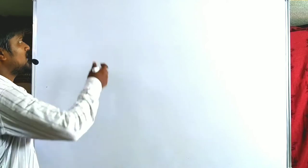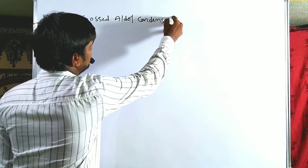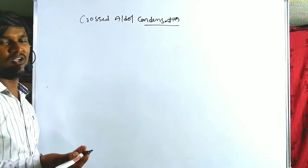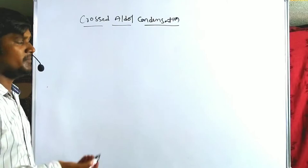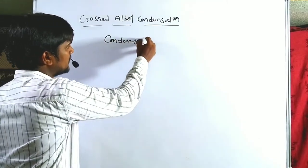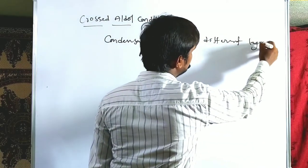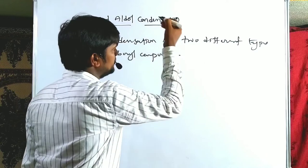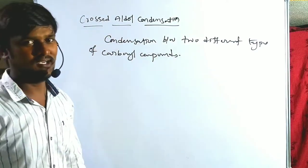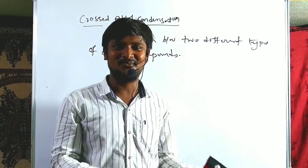Welcome to the RPP Resonance Commission. We are discussing crossed aldol condensation. Condensation means loss of small moieties, as we discussed in earlier classes. Crossed aldol condensation means the condensation between two different types of carbonyl compounds. We know that we have two types of carbonyl compounds: one is aldehyde and another one is ketone.